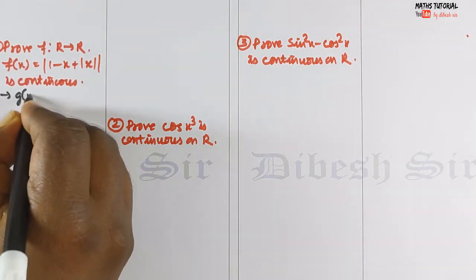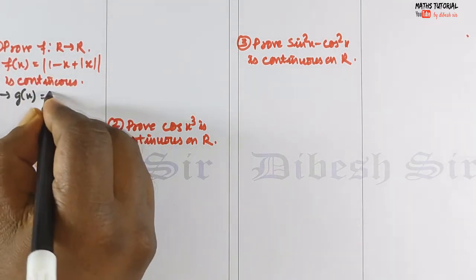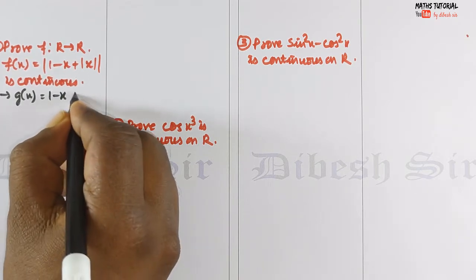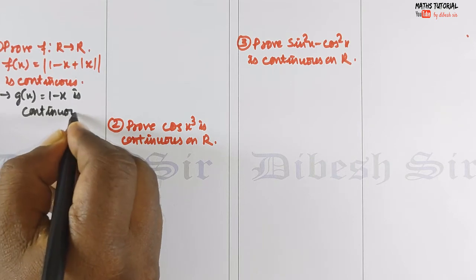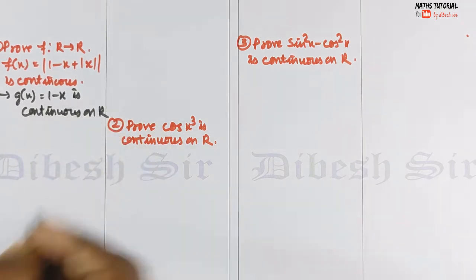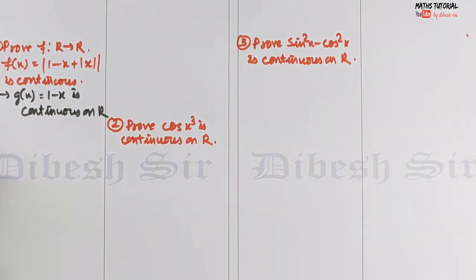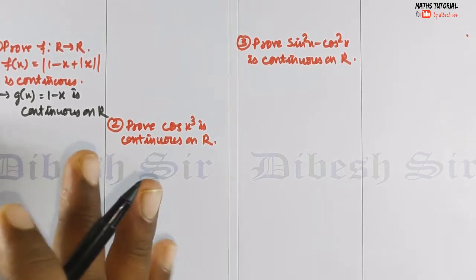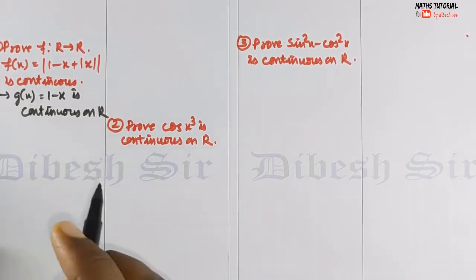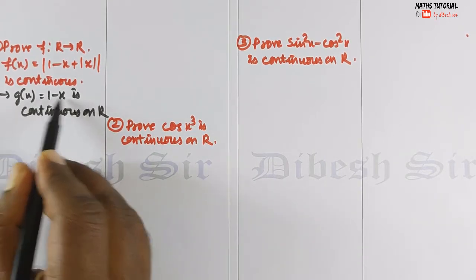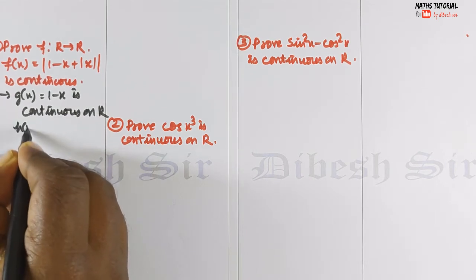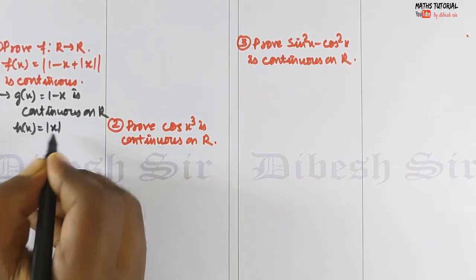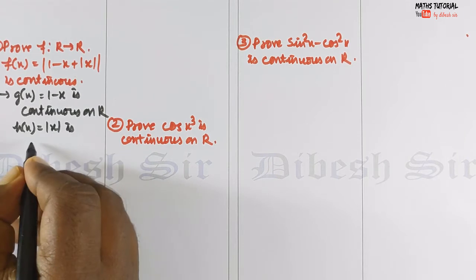First question: prove that f is a function from R to R, where f(x) = |1 - x + |x|| is continuous on R. We will take g(x) = 1 - x, which is continuous on R. This is a linear function, so it is continuous on R. Then we have h(x) = |x|, which is also continuous on R.